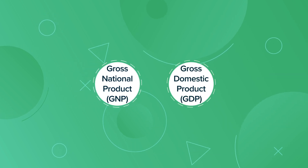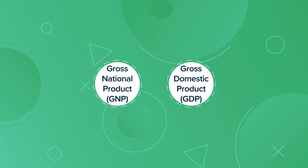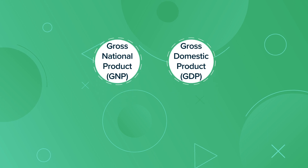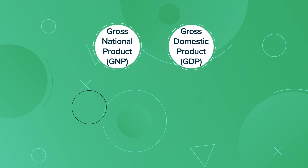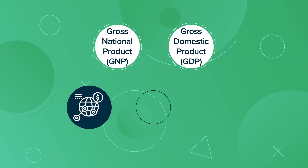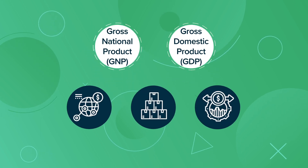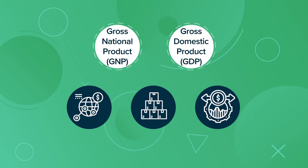A large difference between GDP and GNP can indicate a strong involvement with international trade, production, or financial operation.